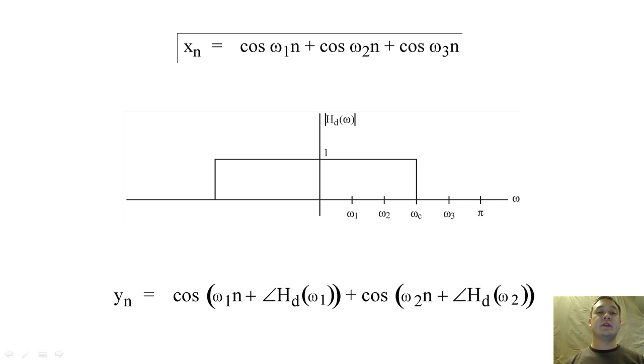Suppose we had an input that is the summation of three cosines. If we filtered this input with an ideal low-pass filter with magnitude 1, then the magnitude of the two lower frequency cosines would remain the same, but the magnitude of the high frequency cosine would be reduced to zero. So we know that the magnitude of the filter can completely remove frequency content. That's pretty straightforward.